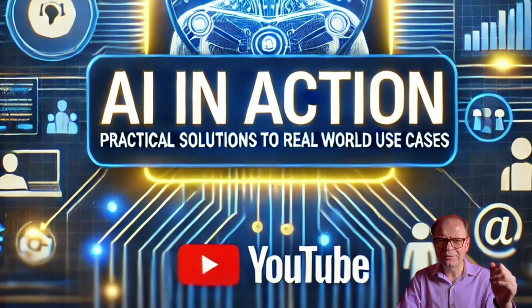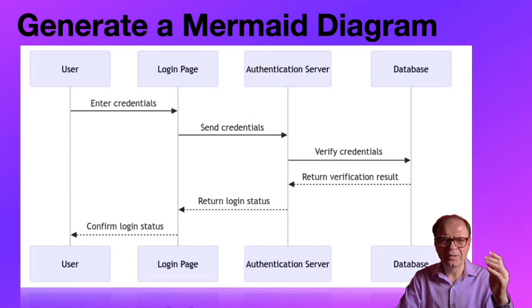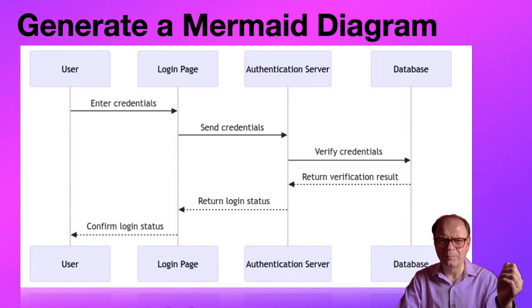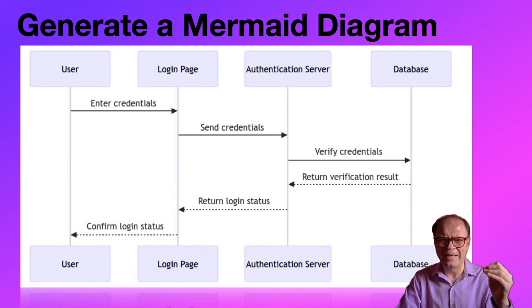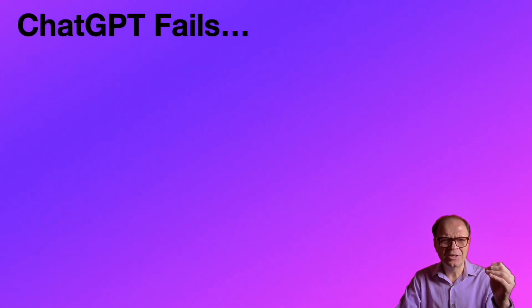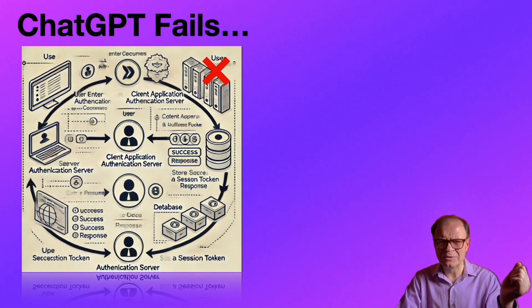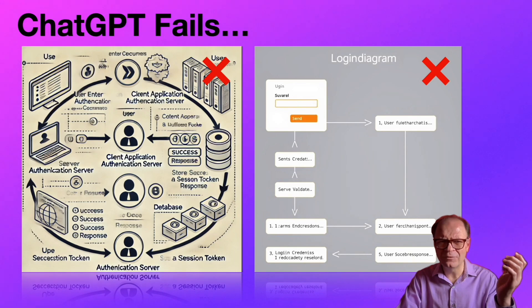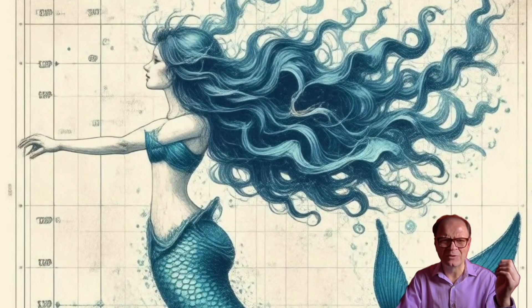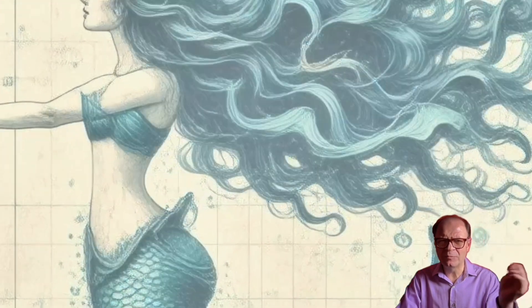And yet, when we need to do something that sounds relatively simple, we seem to get lost very quickly. Take mermaid diagrams, for example. What we have here is a simple login sequence diagram for a web page. Have you tried generating something like this using one of the AI image generators? You may get something like this, or this, and if you're less lucky, you may also get something like this. But the problem goes beyond mermaids and fairies.